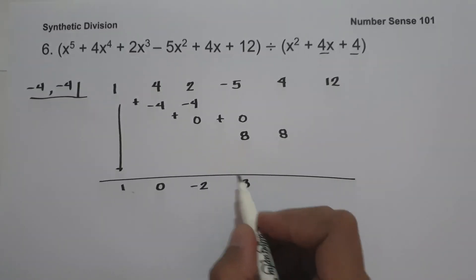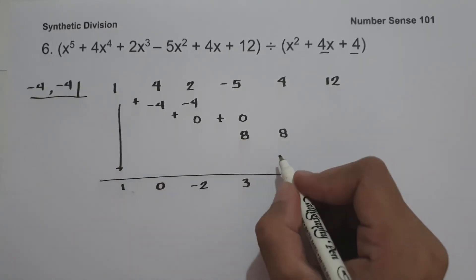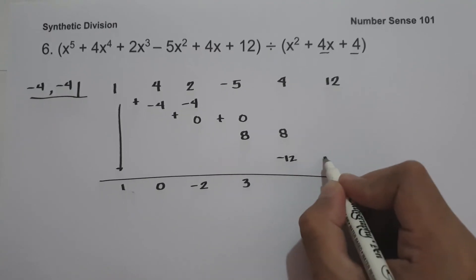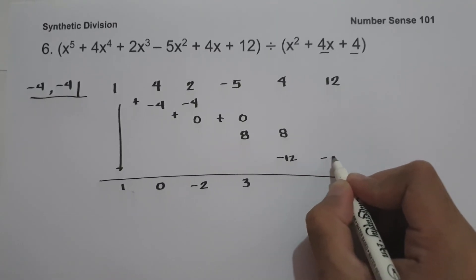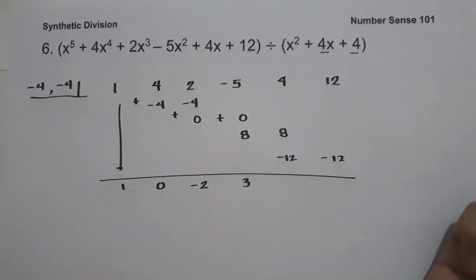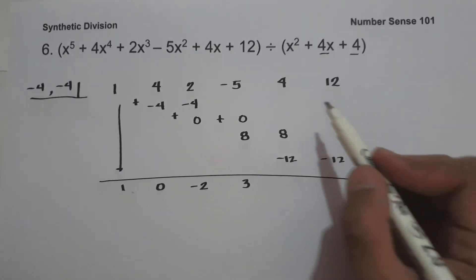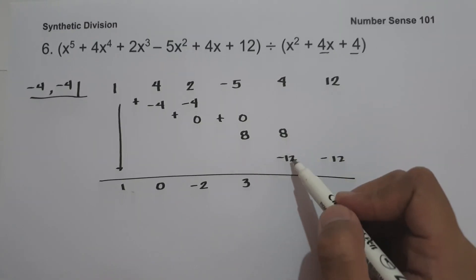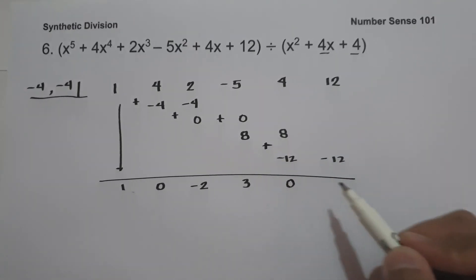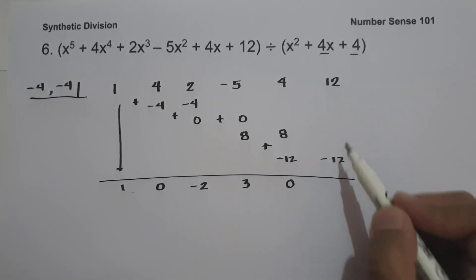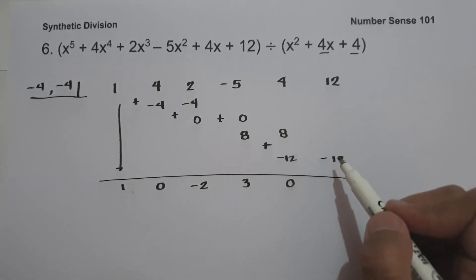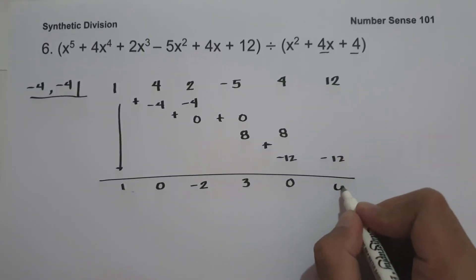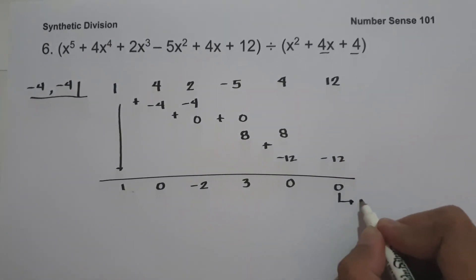Three multiplied by negative 4 and negative 4 gives negative 12 and negative 12. Four plus 8 plus negative 12 is 0. And 12 plus negative 12 is 0. So this will be our remainder.